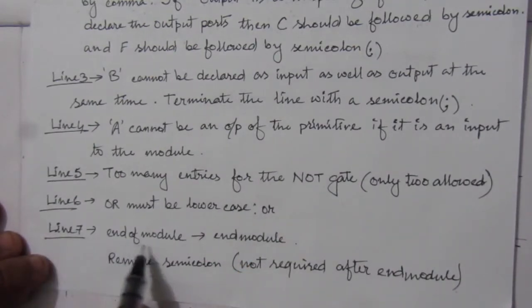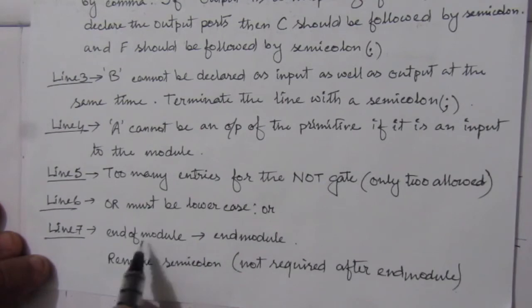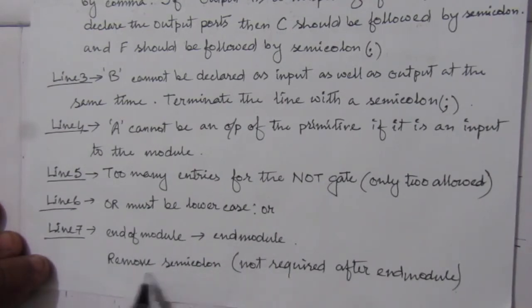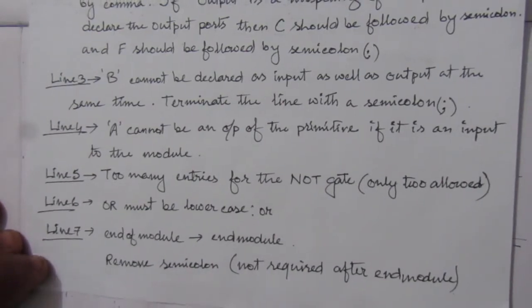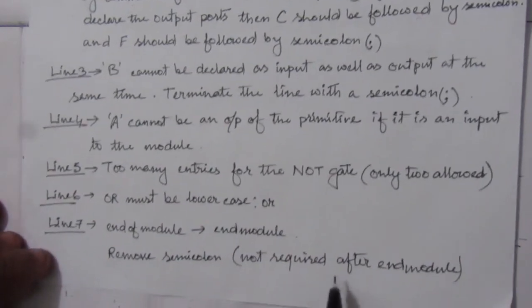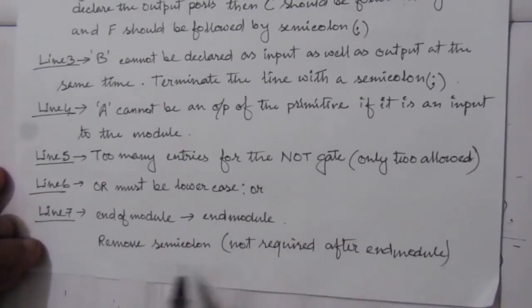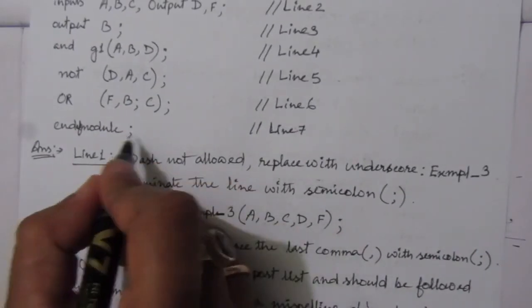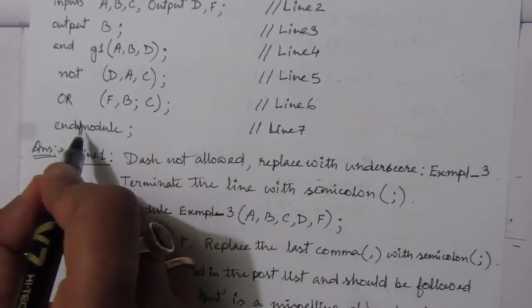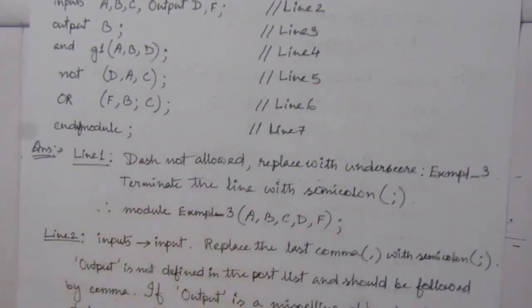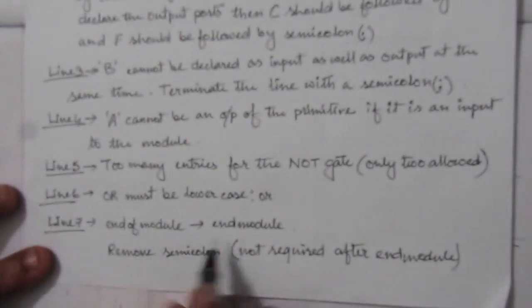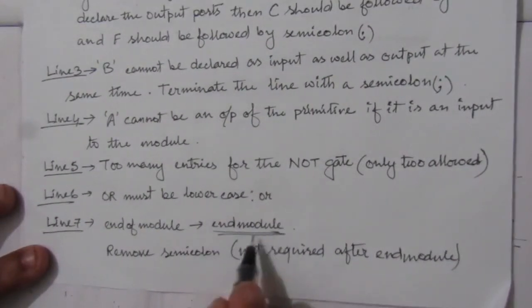In the seventh line, 'end of module' should be 'endmodule' — the word 'of' is not required. Also, the semicolon after 'endmodule' is not required and must be removed. So the correct form is simply 'endmodule' with no semicolon.